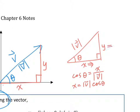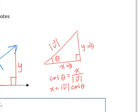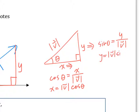That means x equals the magnitude of v times cosine theta. Using the same logic, can you figure out what y is? Y is the opposite side, magnitude of v is the hypotenuse. So what kind of trig ratio is that? Sine. So sine theta equals y over magnitude of v, which means y equals magnitude of v times sine theta.